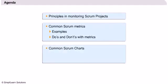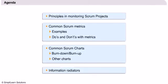We shall talk about some of the common charts and graphs used in Scrum. This includes the burn-up and burn-down charts and other graphs. Lastly, we talk about information radiators, a concept that originated in the crystal family of methodologies, but one that can be very useful in Scrum as well.